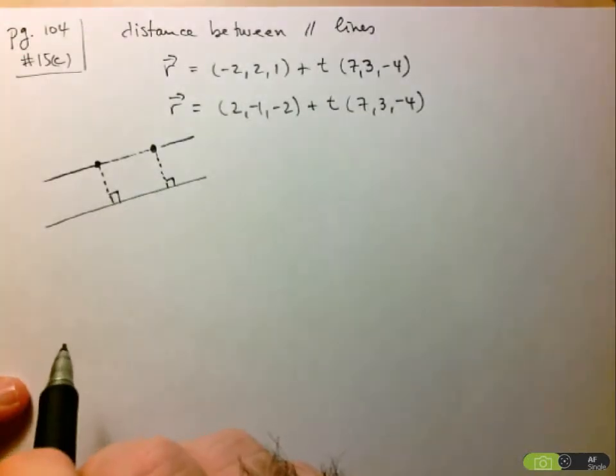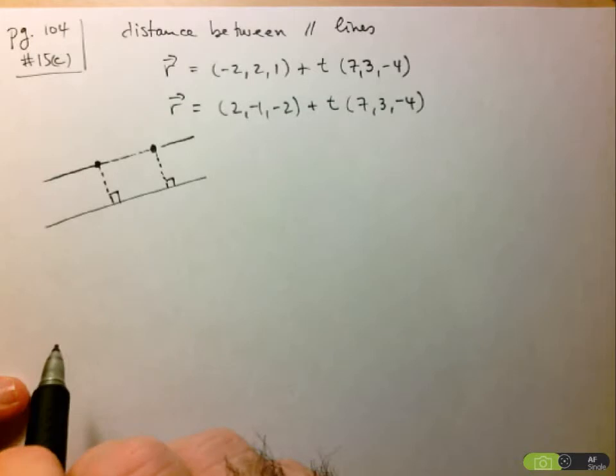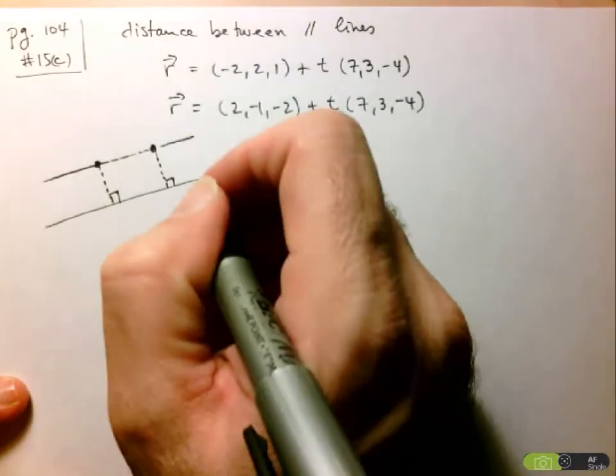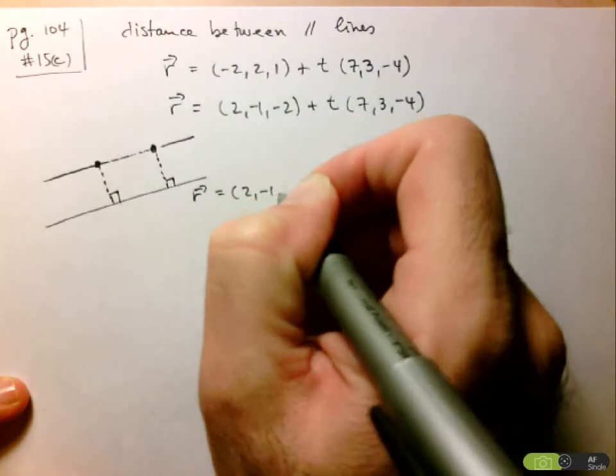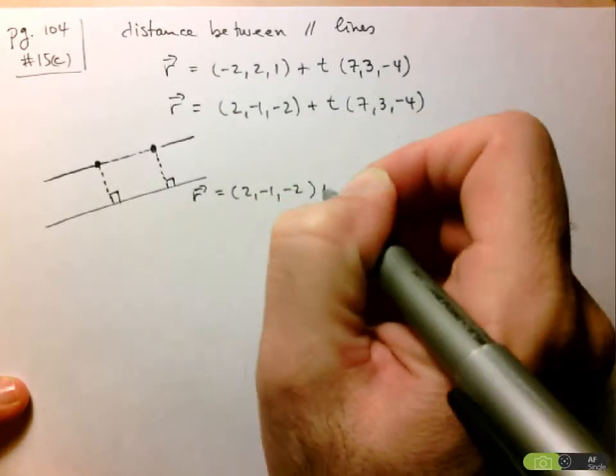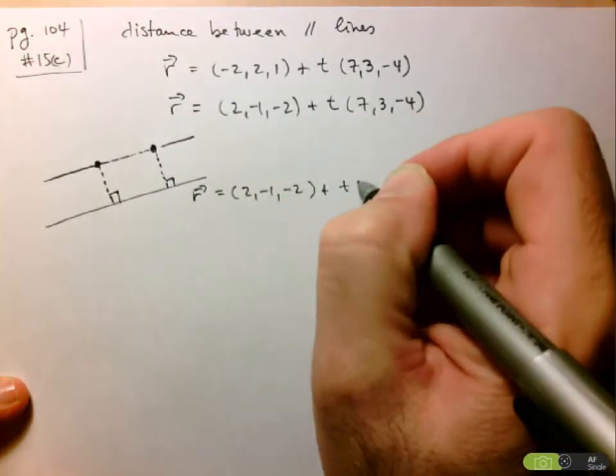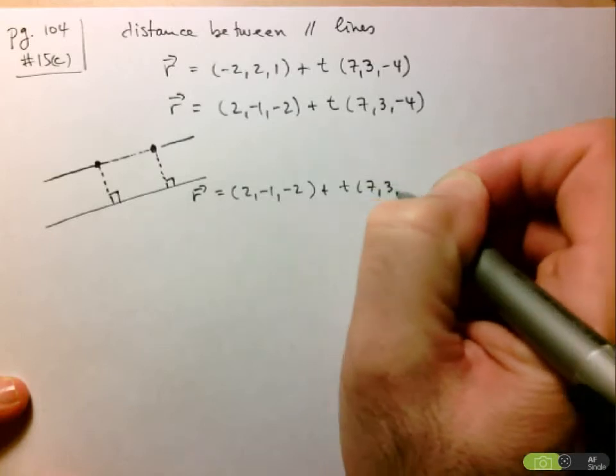So that gives us a way to solve this problem. For example, let's say we take this line as being (2, -1, -2) + t(7, 3, -4).